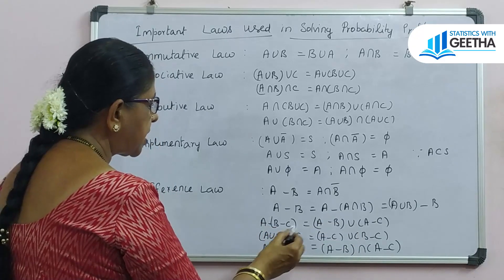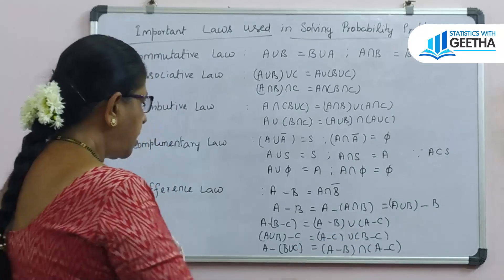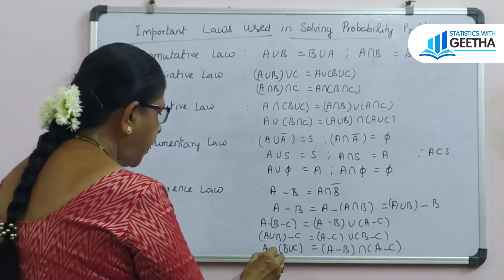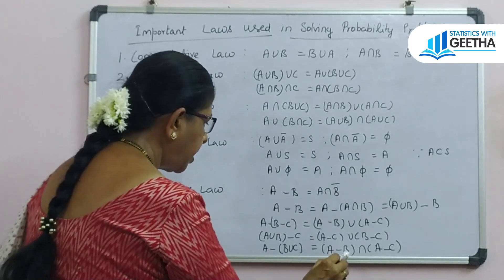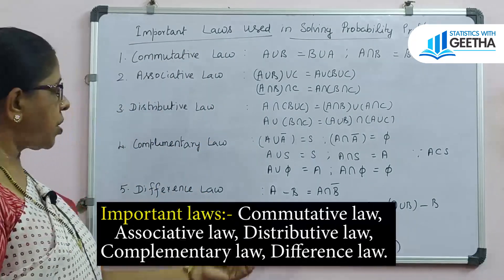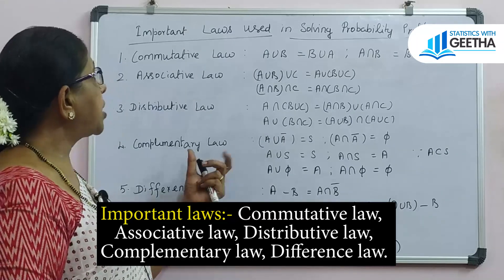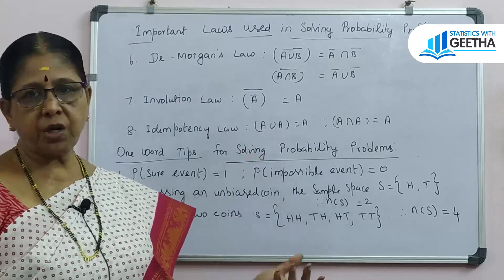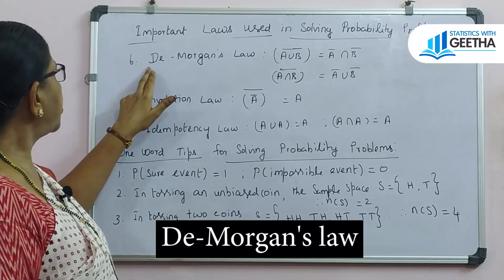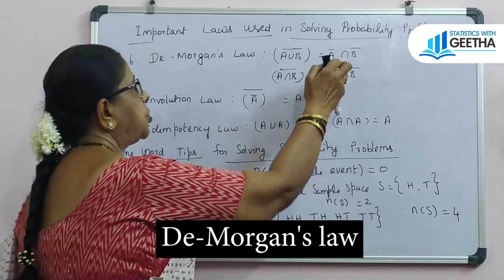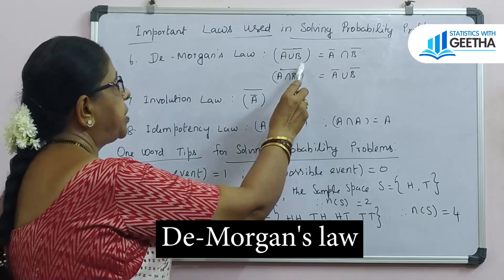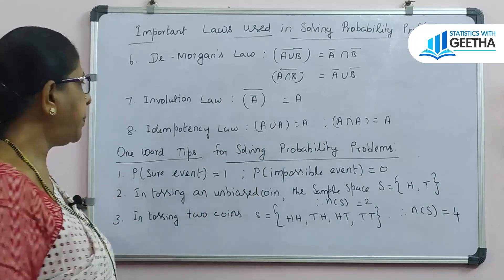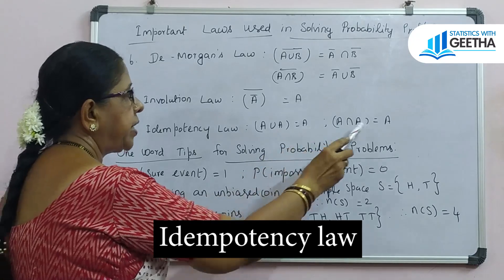A union (B union C) equals (A union B) union C. Also, (A union B) minus C can be written as (A minus C) union (B minus C). These are useful laws for solving probability problems. De Morgan's law: (A union B) complement equals A complement intersection B complement; (A intersection B) complement equals A complement union B complement.